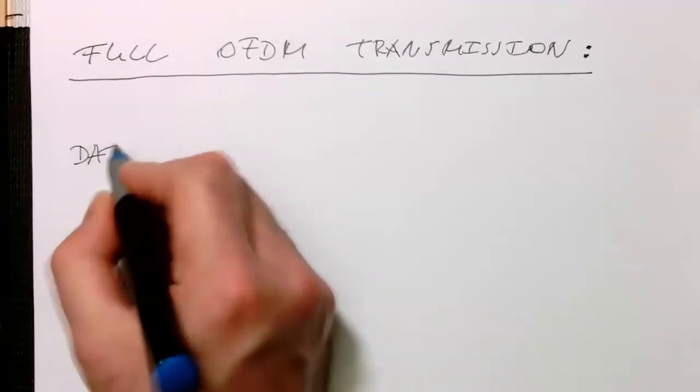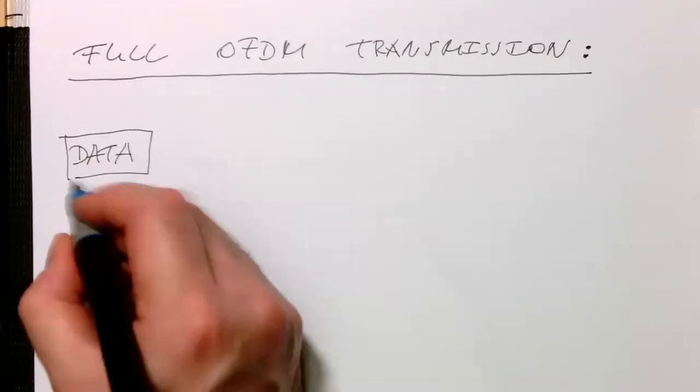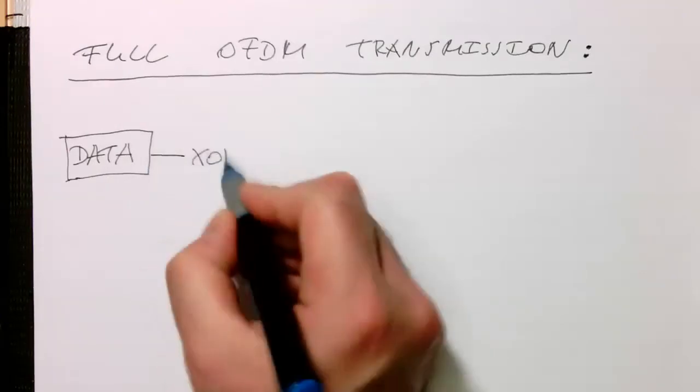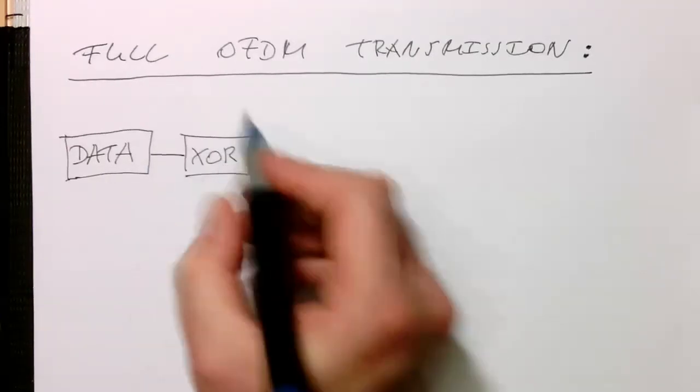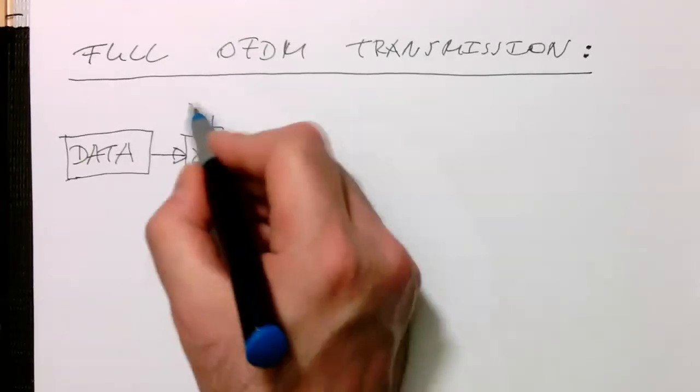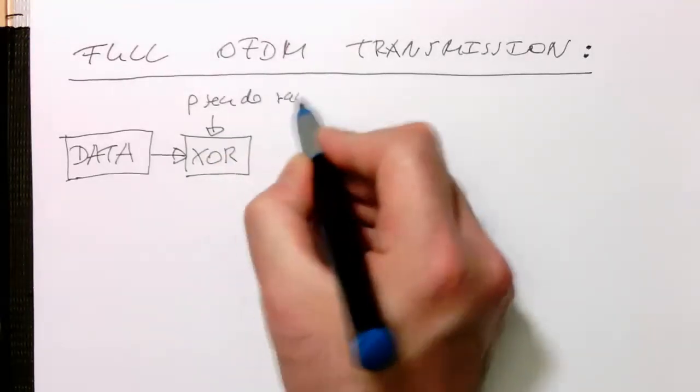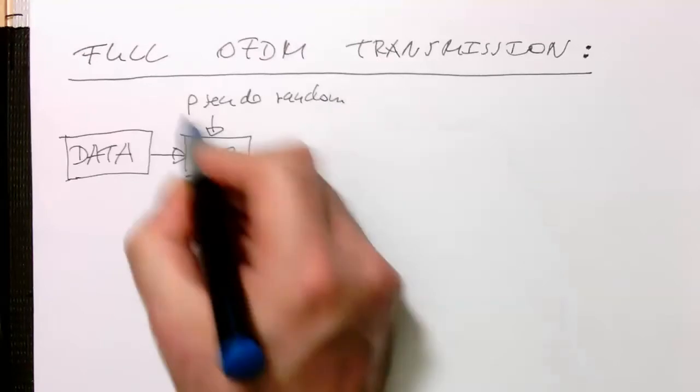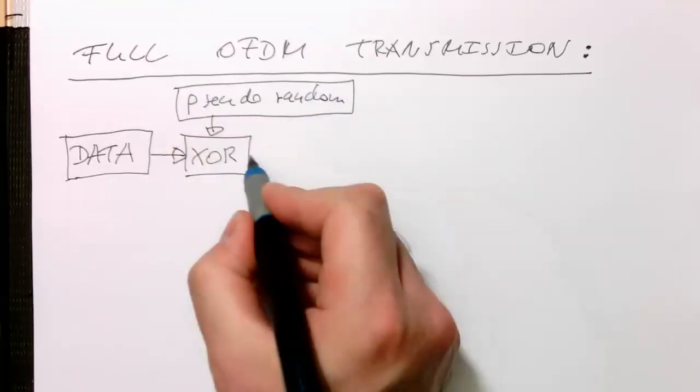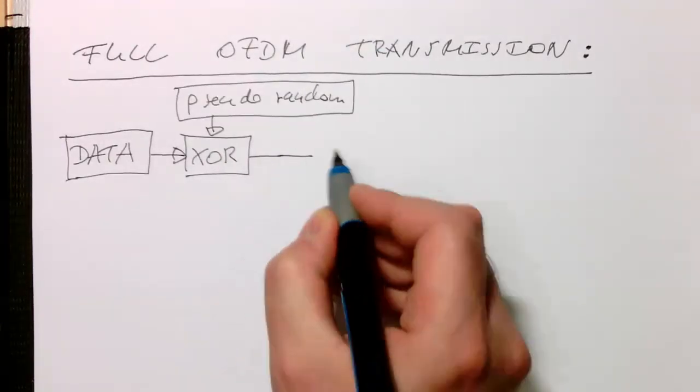We've got our data, and the data we send through our XOR and XOR this with a pseudo-random number sequence. This is our energy dispersal.